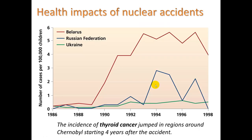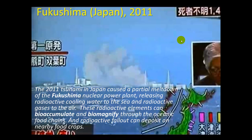Health effects from Chernobyl include a huge spike in thyroid cancer in the 1990s in Belarus, where Chernobyl is located. And here's Fukushima, Japan. Radioactive elements are finding their way into the seawater, where they can bioaccumulate and biomagnify through the oceanic food chains. Also, the radioactive fallout from the explosion can deposit on nearby food crops.